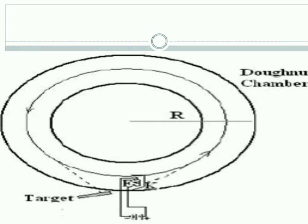When alternating current passes in the electromagnet, the flux increases in the center of the doughnut. That is, flux gets concentrated at the center of the doughnut chamber.